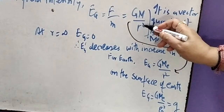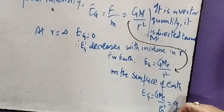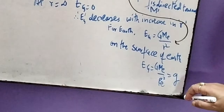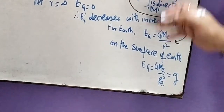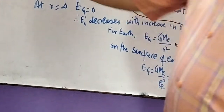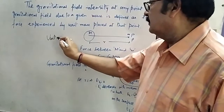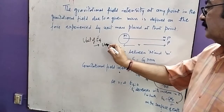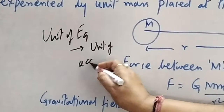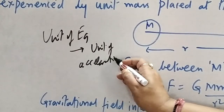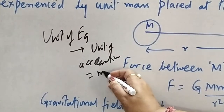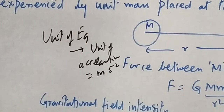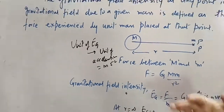On the surface of Earth, small R becomes capital R_E, so the gravitational field intensity equals G·M upon R_E squared, which is the expression for acceleration due to gravity. The unit of gravitational field intensity is always that of acceleration due to gravity — the unit of acceleration, that is, meter per second squared. It is a vector quantity and the dimension is L·T⁻².